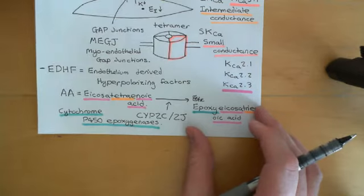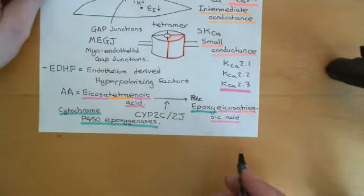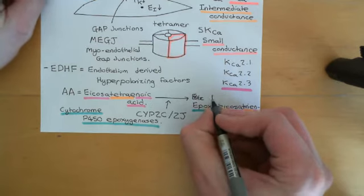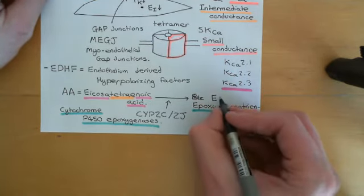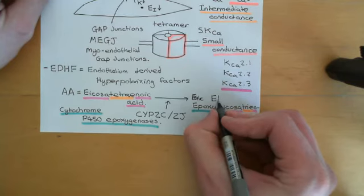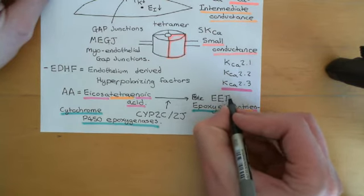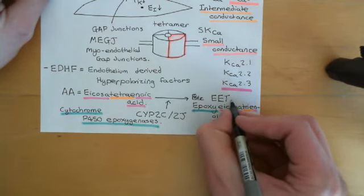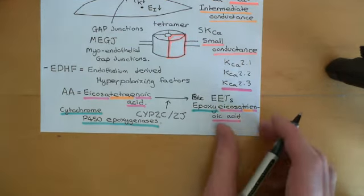Epoxy-eicosatrienoic acids are usually abbreviated to EETs — E for epoxy, E for eicosa, and T for trienoic acid.